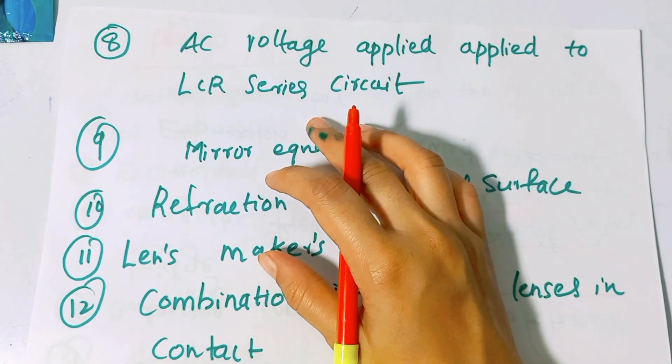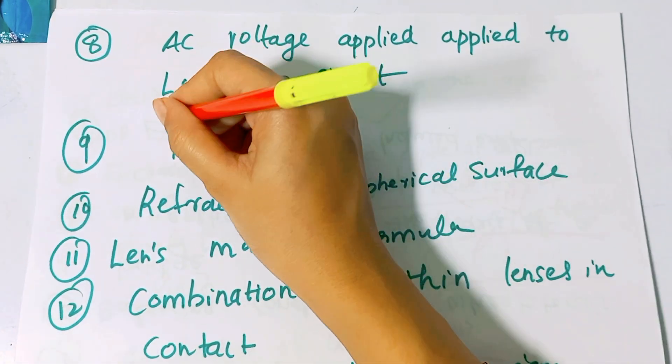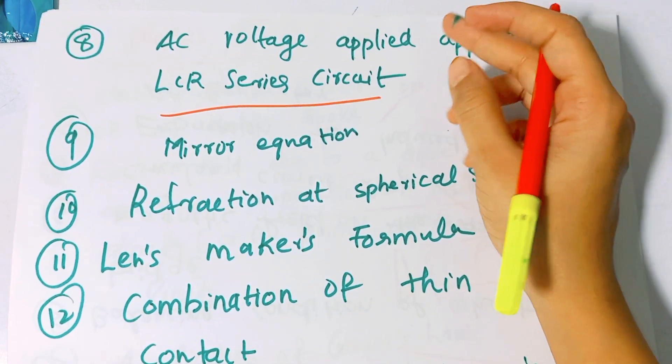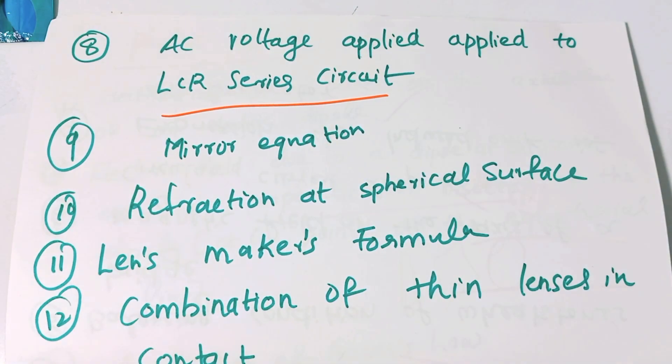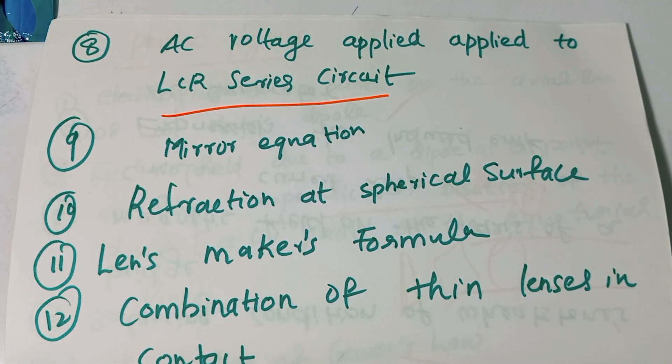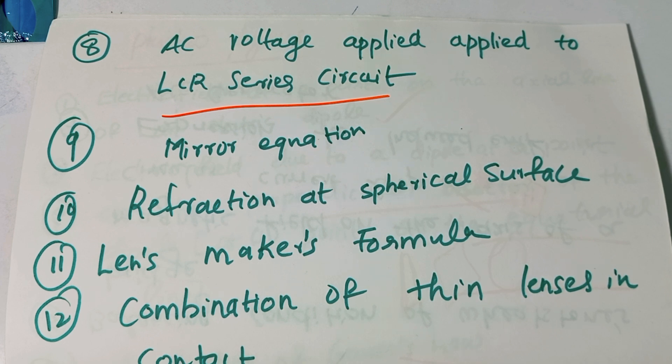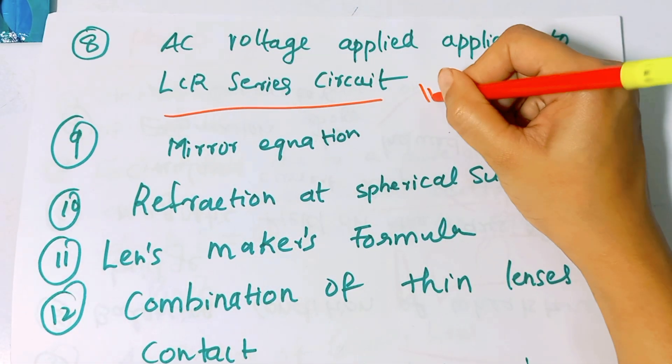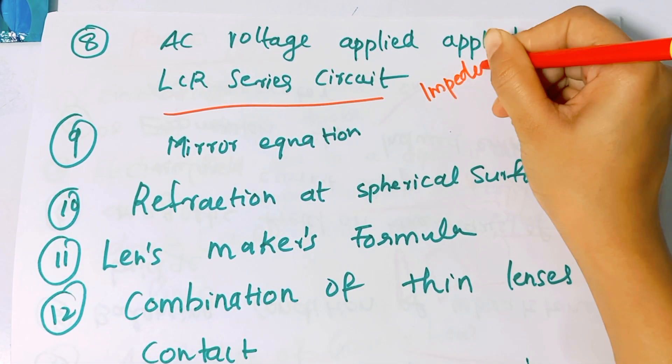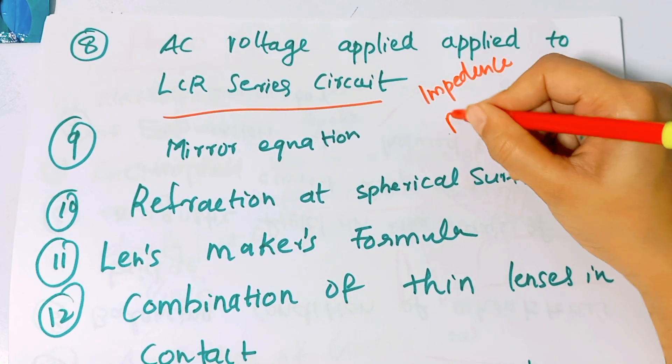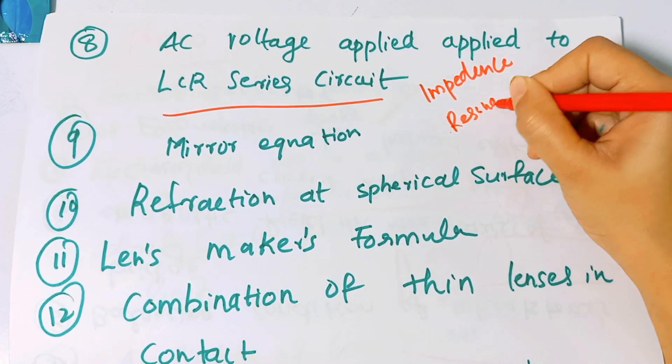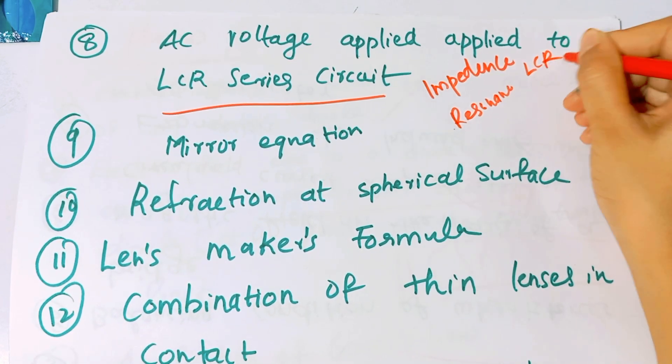In the alternating current chapter, we have important topics. Impedance derivation and resonance condition in LCR series circuits are necessary to study.